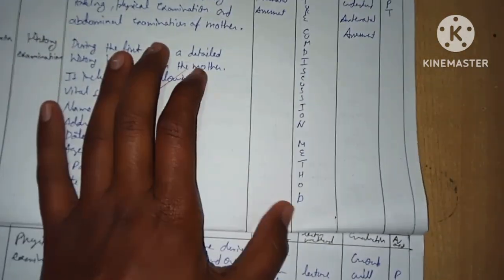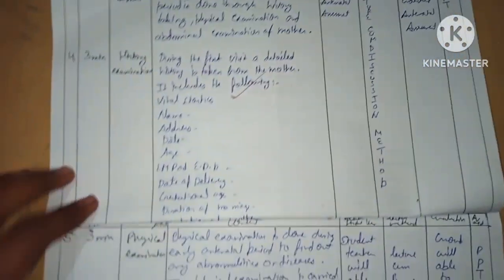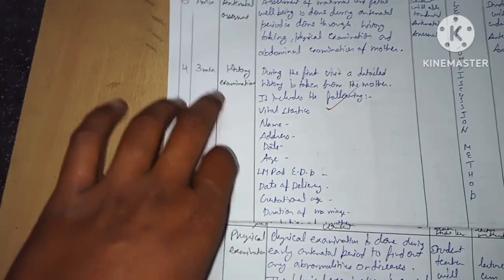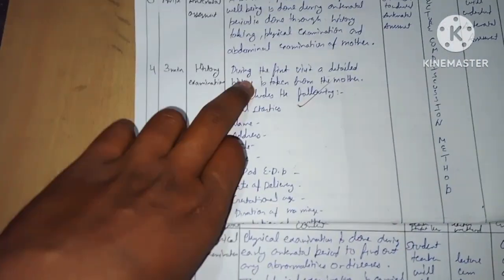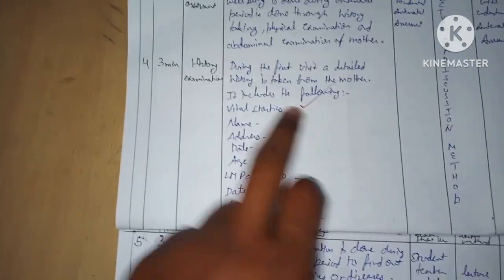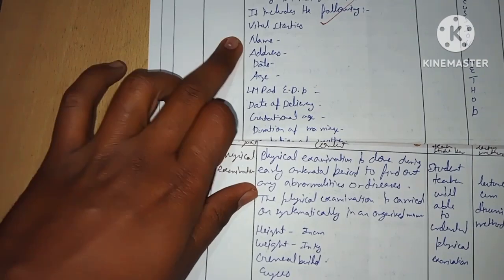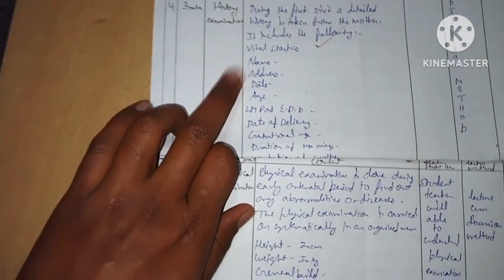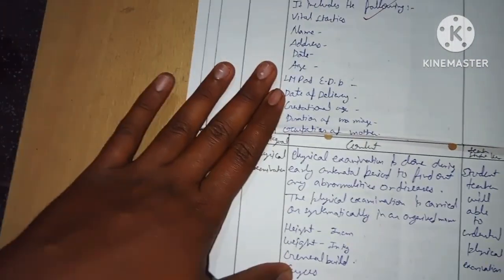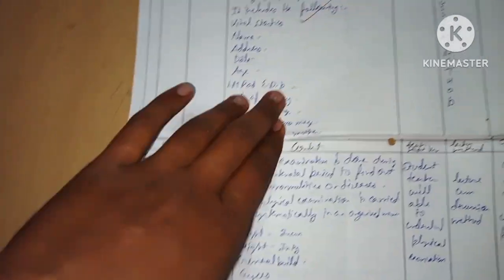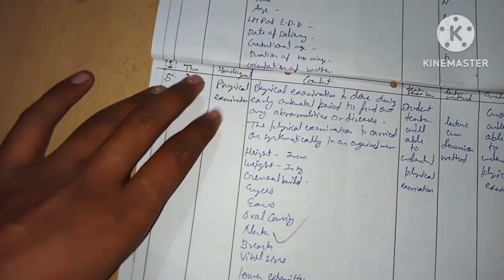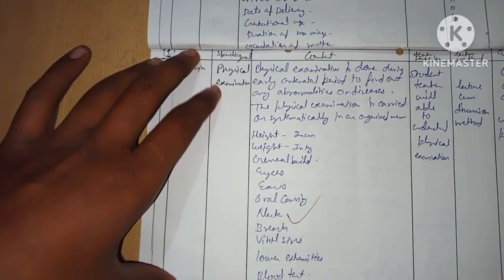Fourth point — time: three minutes. Specific objective: history of examination. Content: during the first visit, a detailed history is taken from the mother. It includes the following vital statistics — name, address, date, age, LMP, EDD, date of delivery, gestational duration, duration of marriage, and occupation of the mother.